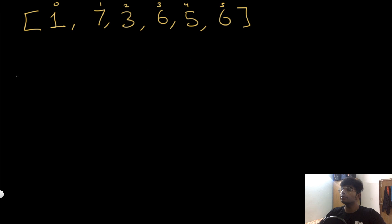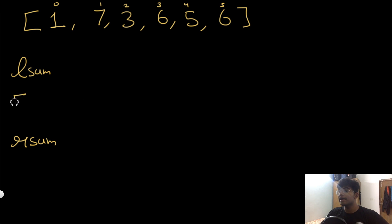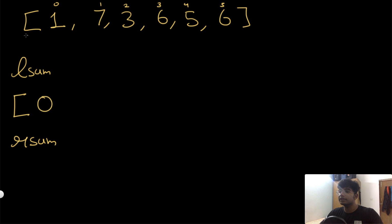Let's look at the brute force solution. The idea is to keep track of the left sums at each index and the right sums at each index, then compare them — whenever they're the same, that's the pivot index. For the left sum array, the first value is zero because there's nothing to the left of index zero. Moving to the first index, the left sum is one.